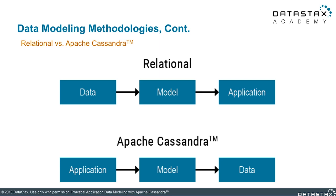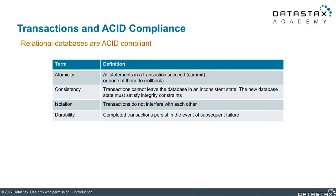We've already stated that Cassandra doesn't support ACID transactions like relational databases do. Let's review what that term ACID means so we can ensure we understand the guarantees that relational databases are making. First, atomicity — that means that all of the statements or mutations in the transaction will succeed or fail as a unit. Relational databases provide a behavior known as rollback, which ensures that if a transaction can't be completed, all data is returned to its original state. Consistency in ACID transactions usually refers to referential integrity.